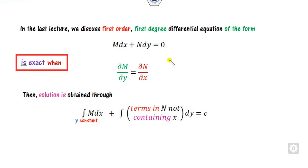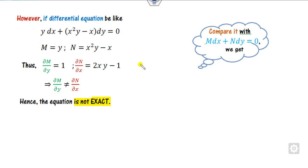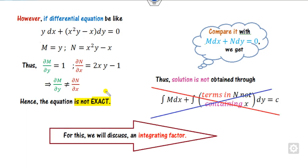In the last lecture we have seen any differential equation of the form M dx plus N dy is said to be exact when this condition is satisfied. When you prove that this is an exact differential equation, you can find the solution by using equation number 1. However, there are many differential equations which are of the M dx plus N dy form but this condition does not satisfy.